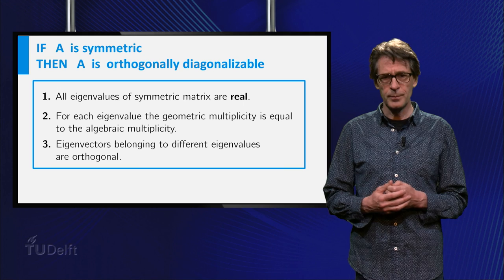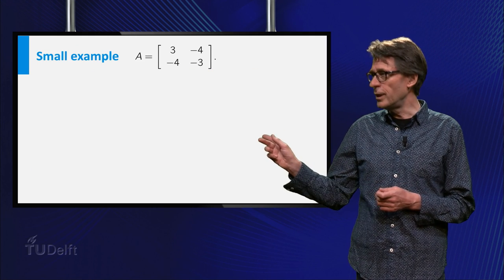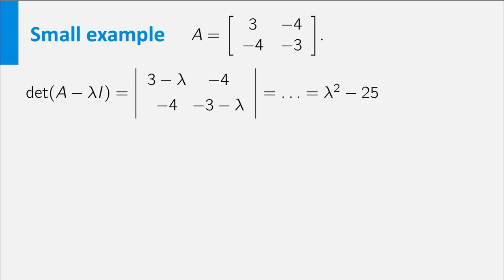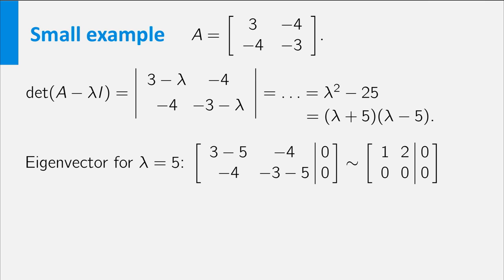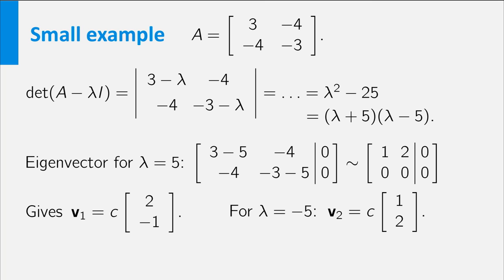Let's have a look at a small example first. The matrix A shown here is symmetric. Its characteristic polynomial equals lambda squared minus 25, and from this you can already conclude that A is diagonalizable — namely, A has two eigenvalues, plus 5 and minus 5, which give two independent eigenvectors that form a basis of eigenvectors. It is not hard to compute the eigenvectors: for lambda equals 5 you solve a linear system, and from the reduced form you can read off that (2, −1) is an eigenvector. Likewise for lambda equals minus 5 you will find that V2 equals (1, 2) is an eigenvector.